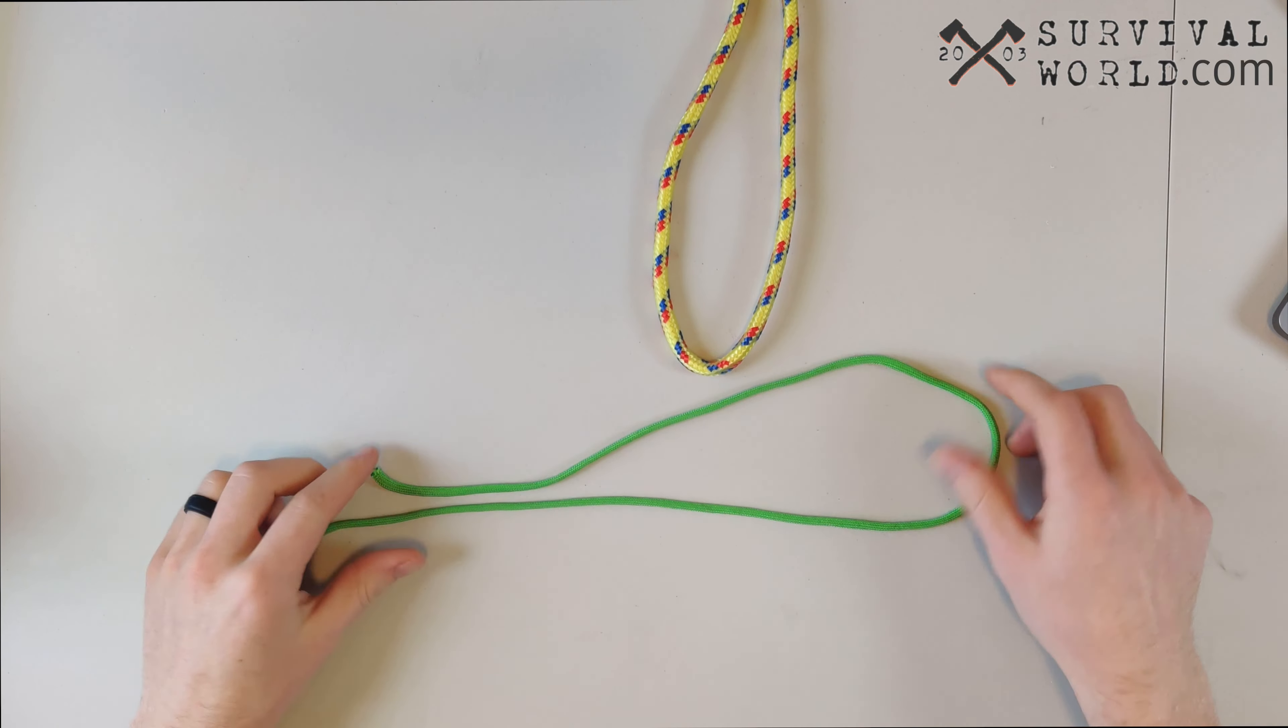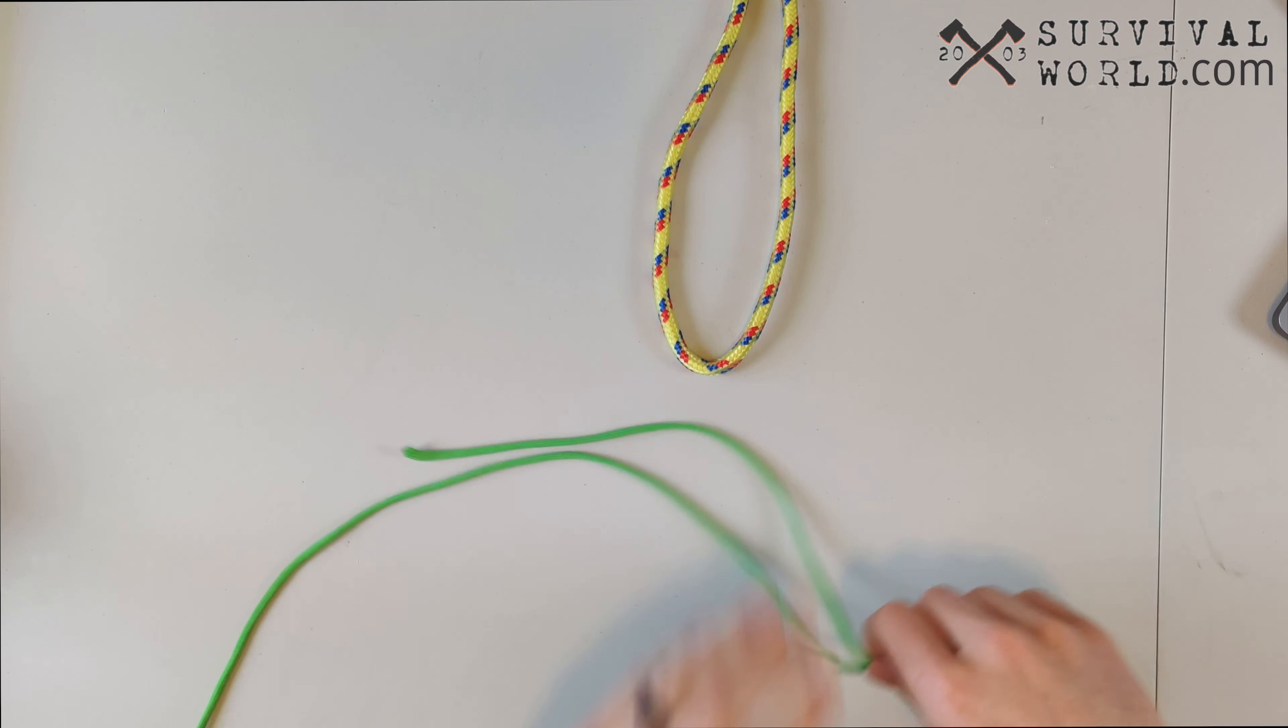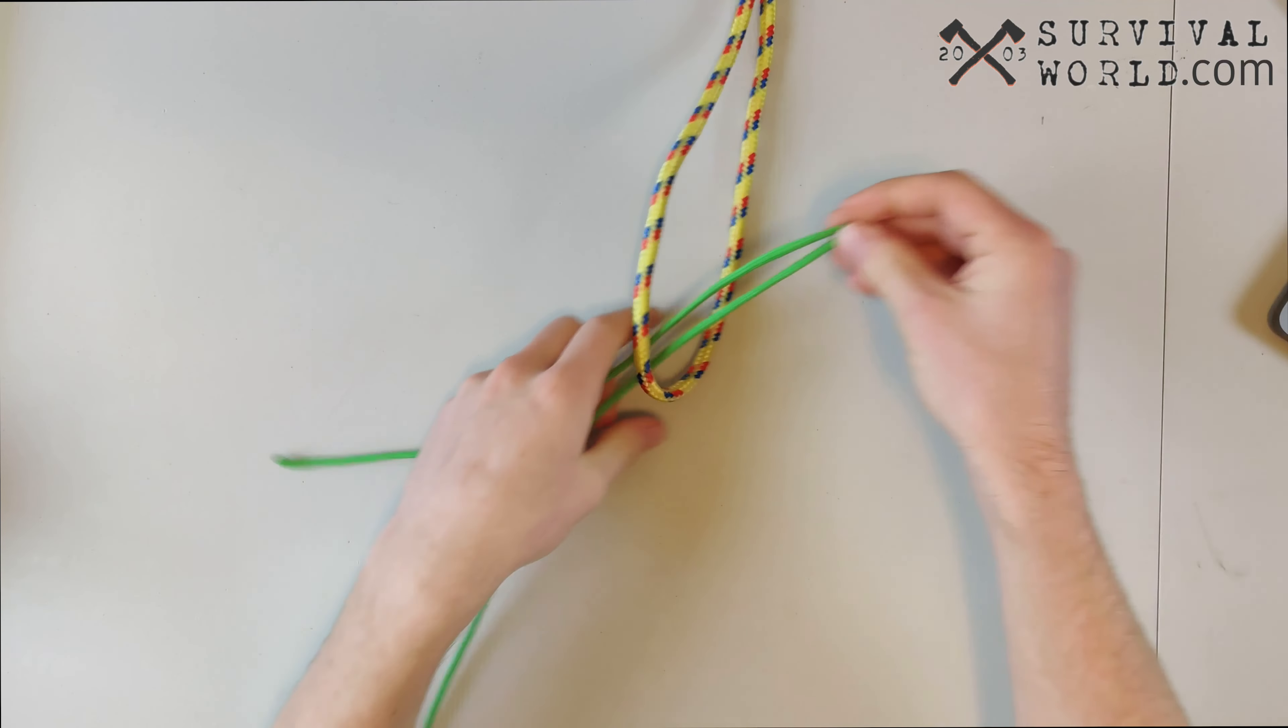The first step to tie the double cinch knot is to double up on the end of your rope, and with this doubled up section what you're going to do is you're just going to run it through the hook or whatever you're trying to tie it to.